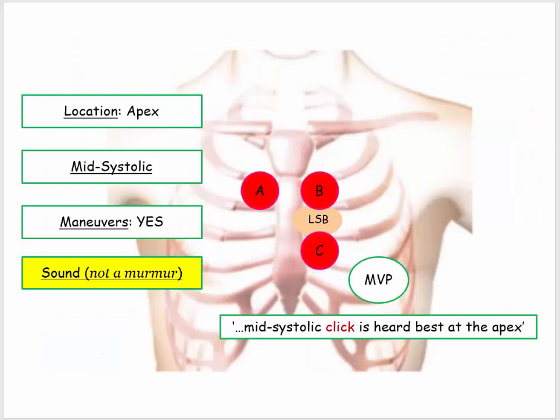We are still at the mitral valve, still at the apex, but there are important modifiers. You will note we are now talking about a sound, not a murmur. That sound will be described as a click occurring during mid-systole. That is unique — no overlap or confusion here. And we finally arrive at the maneuvers.